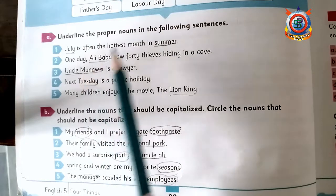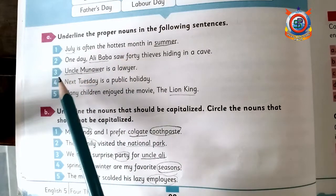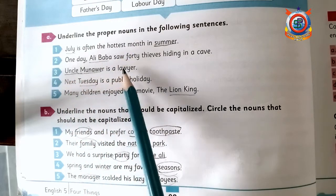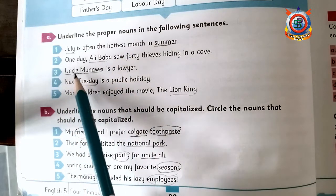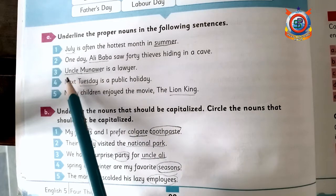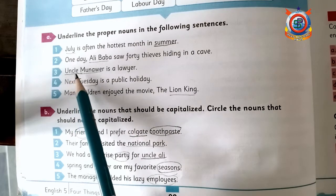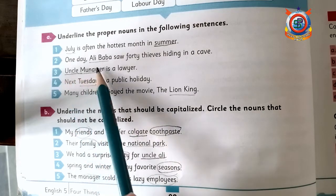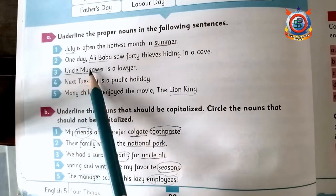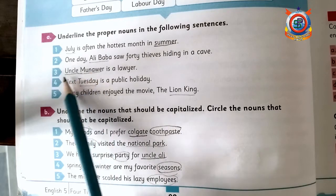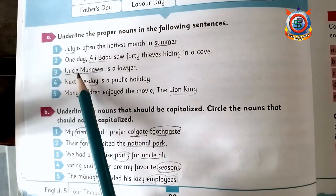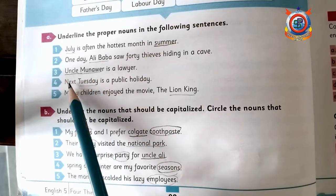Third sentence: 'Uncle Munawur is a liar.' Uncle Munawur is a proper noun, so it should be underlined. Correct.